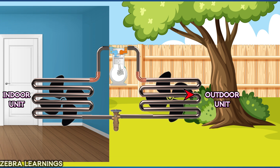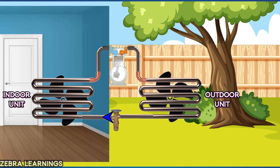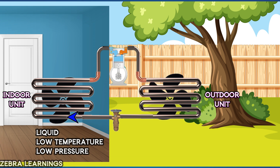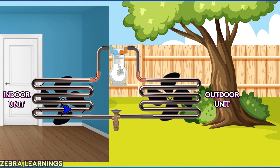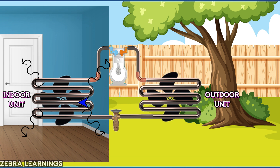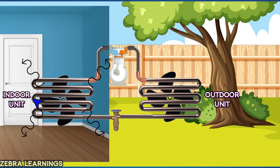Refrigerant flowing through the coil enters the evaporator coil in a well-cooled state. The fan motor behind the coil blows air over the evaporator coil and releases the cooling from the refrigerant to the room.